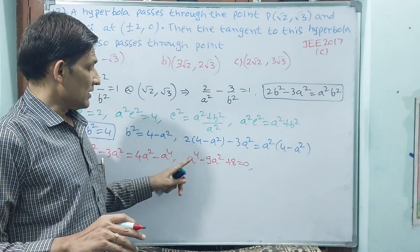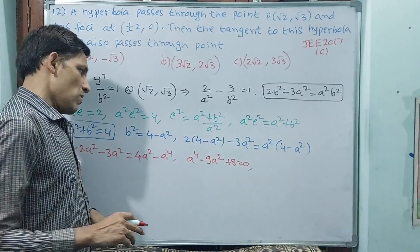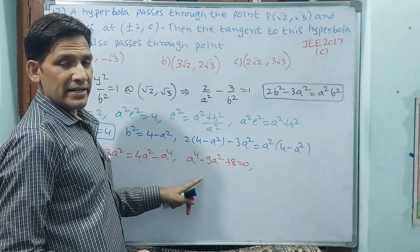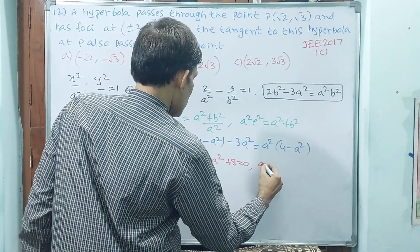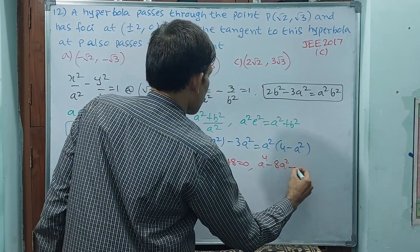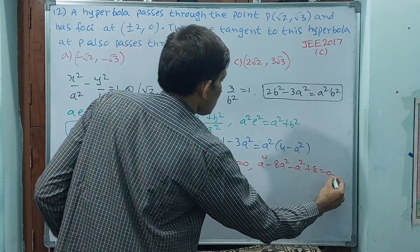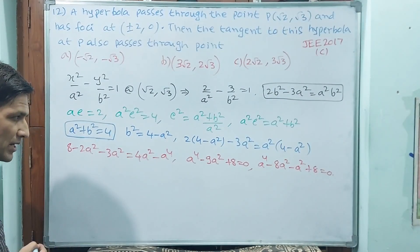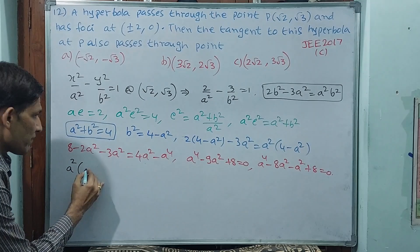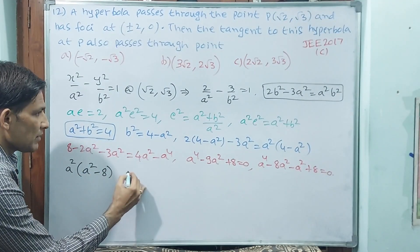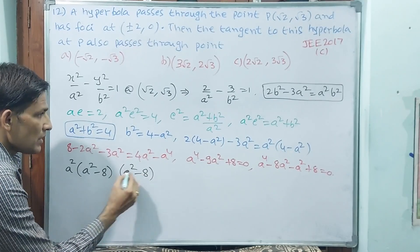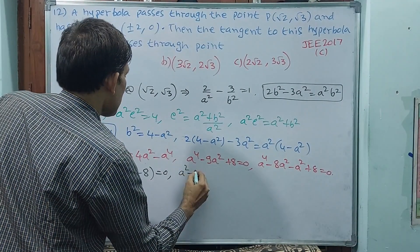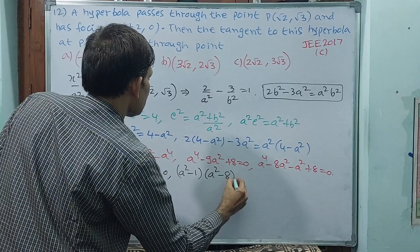Take a squared as x, so a to the power 4 is x squared. This is a quadratic in a squared. We need factors: 8 times minus 1 gives minus 8, and minus 8 plus minus 1 equals minus 9. So: a to the power 4 minus 8a squared minus a squared plus 8 equals 0. Factoring: a squared times (a squared minus 8) minus 1 times (a squared minus 8) equals 0.